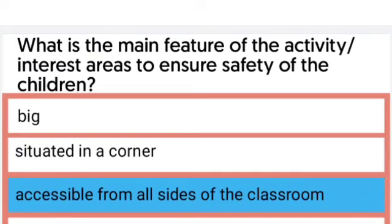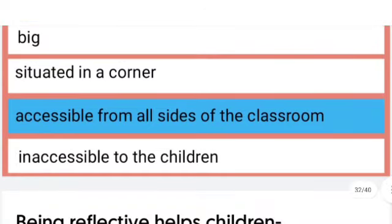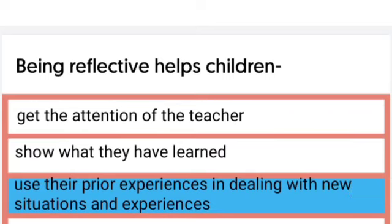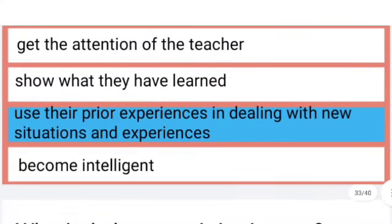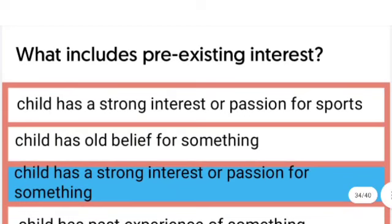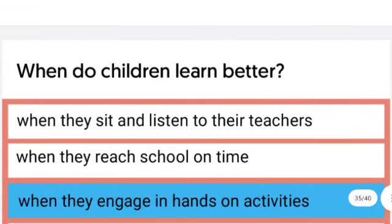The right answer is accessible from all sides of the classroom. Being reflective helps children use their prior experiences in dealing with new situations and experiences. What includes pre-existing interest? The right answer is a child has a strong interest or passion for something.